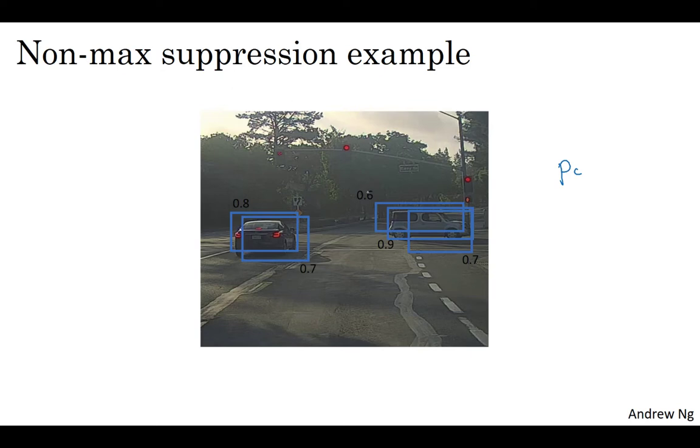So concretely, what it does is it first looks at the probabilities associated with each of these detections, kind of the PCs, although there are some details you learn about in this week's programming exercise. It's actually PC times C1 or C2 or C3, but for now let's just say it's PC with the probability of a detection. And it first takes the largest one, which in this case is 0.9 and says, that's my most confident detection, so let's highlight that. I'm just saying, I found a car there.